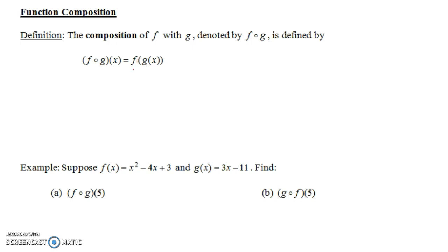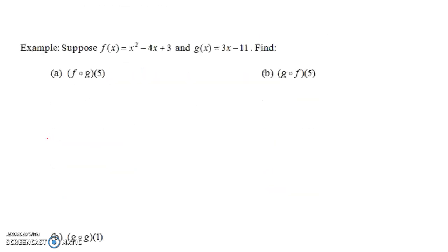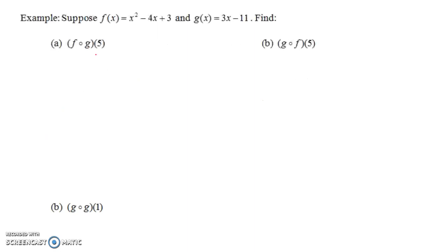This does not mean multiplication — this is not f times g of x. So even though we say f of g of x, that word 'of' does not mean multiplication here. Let's do an example. Suppose we have f of x equals x squared minus 4x plus 3, and g of x equals 3x minus 11. How do we find f circle g of 5?